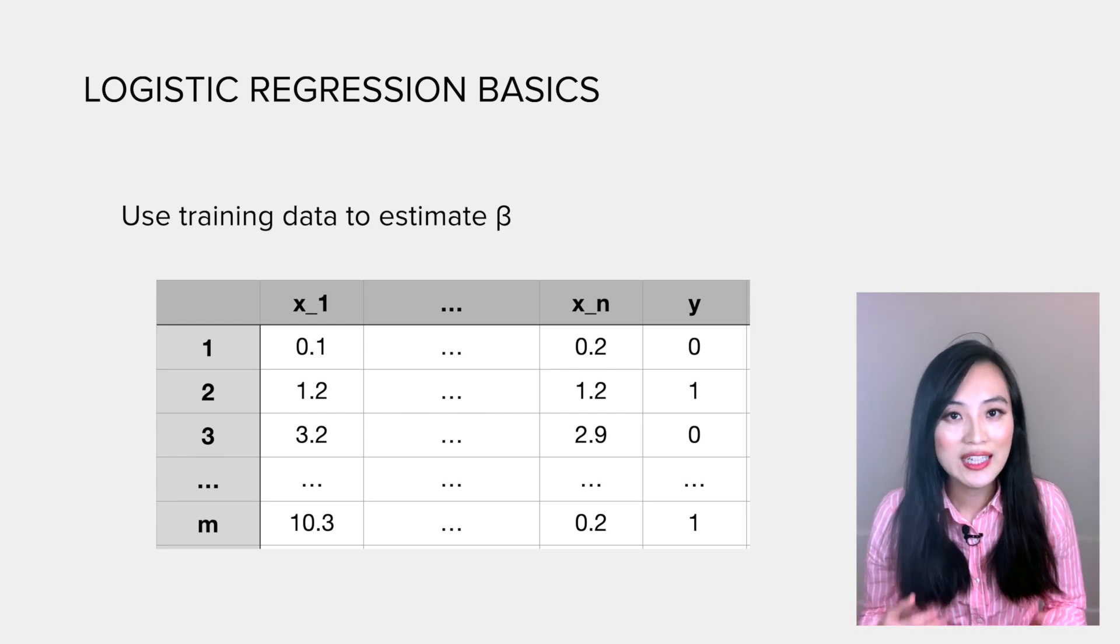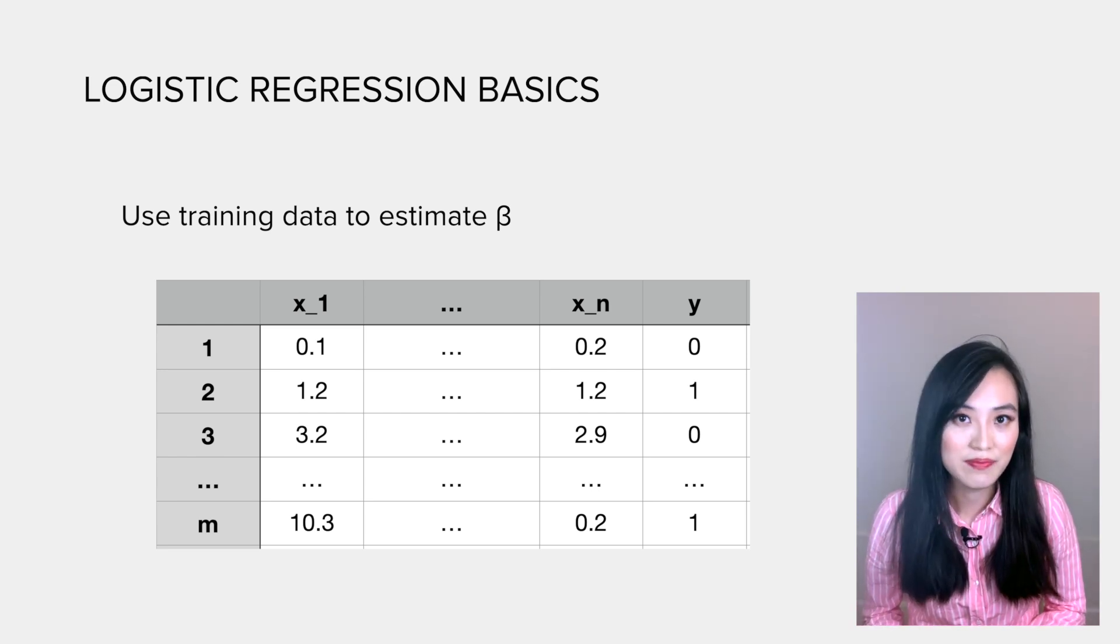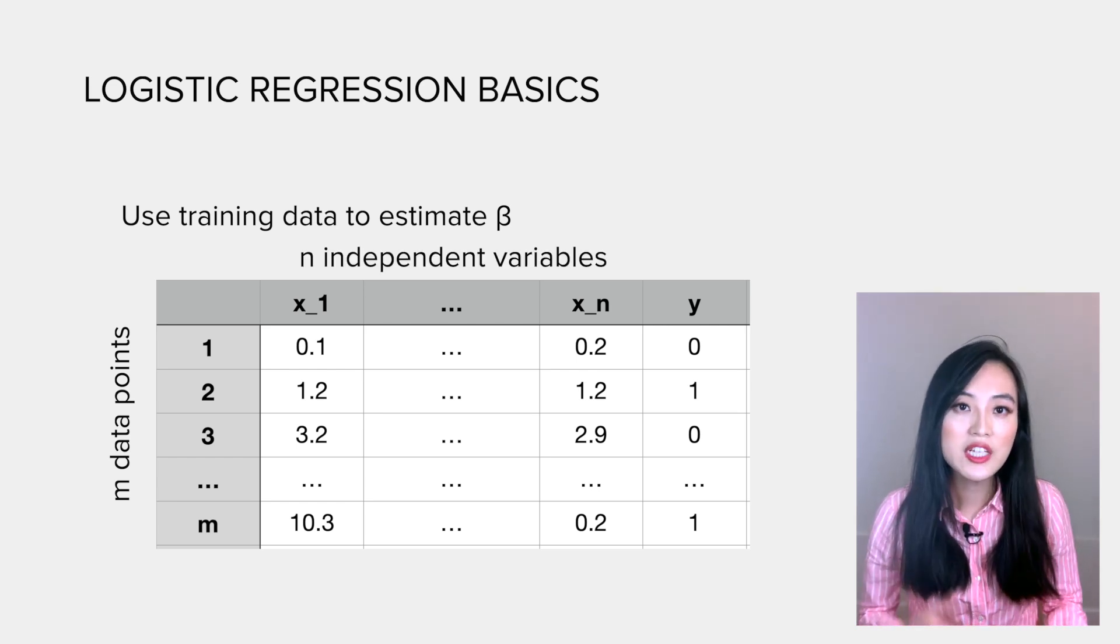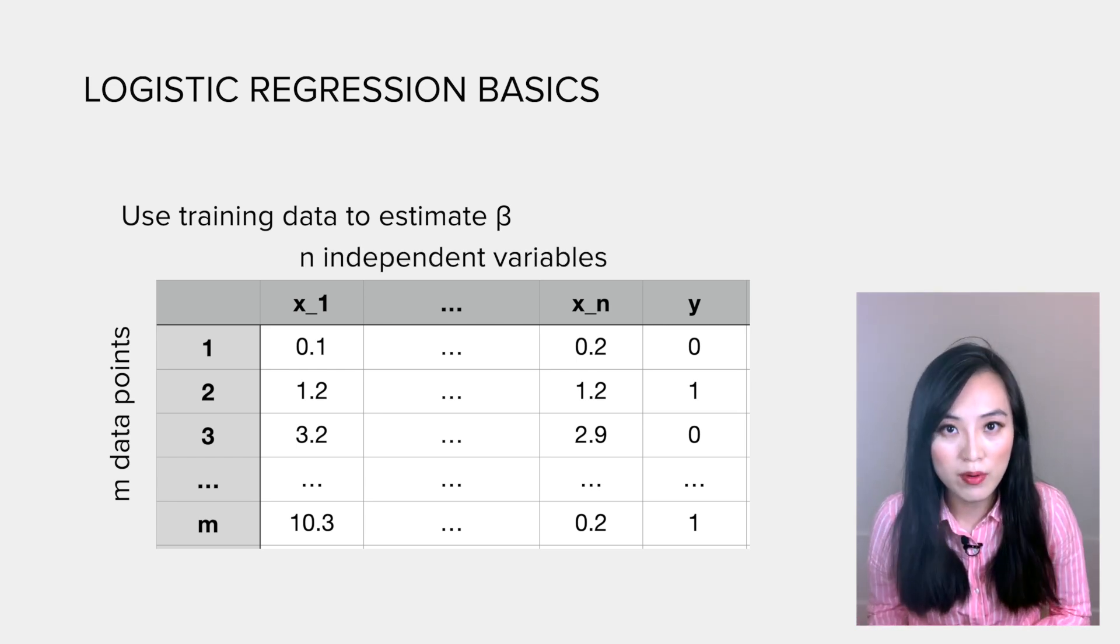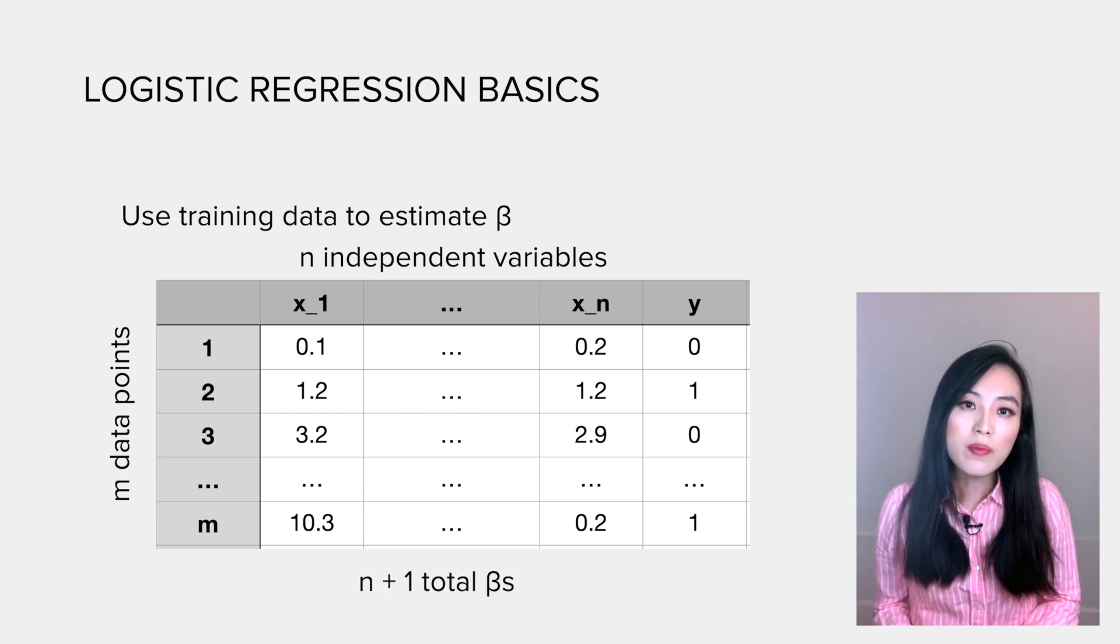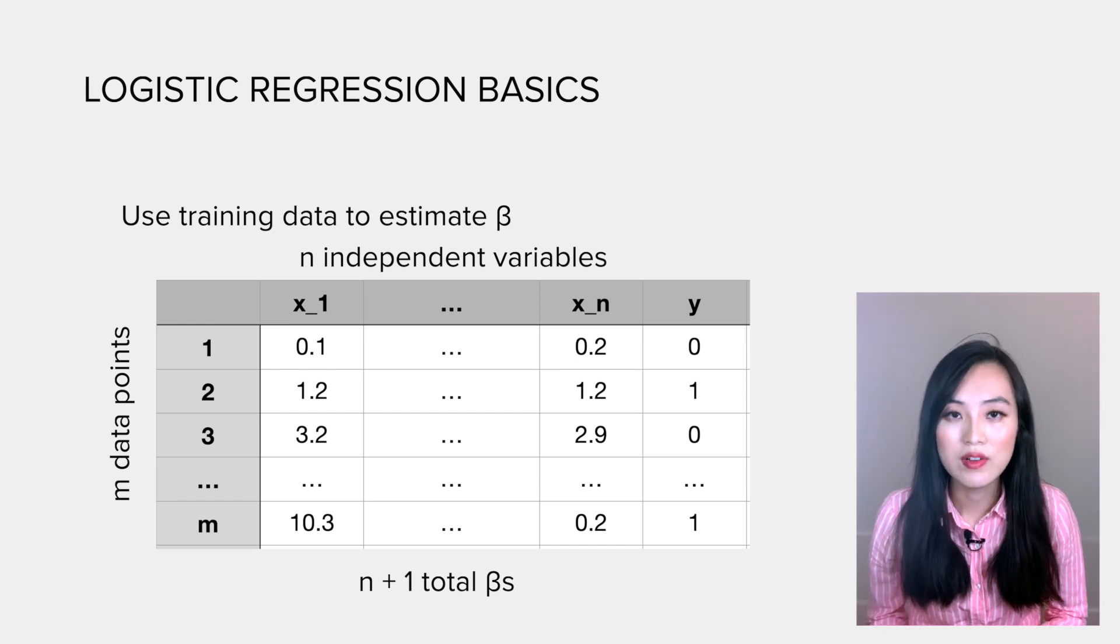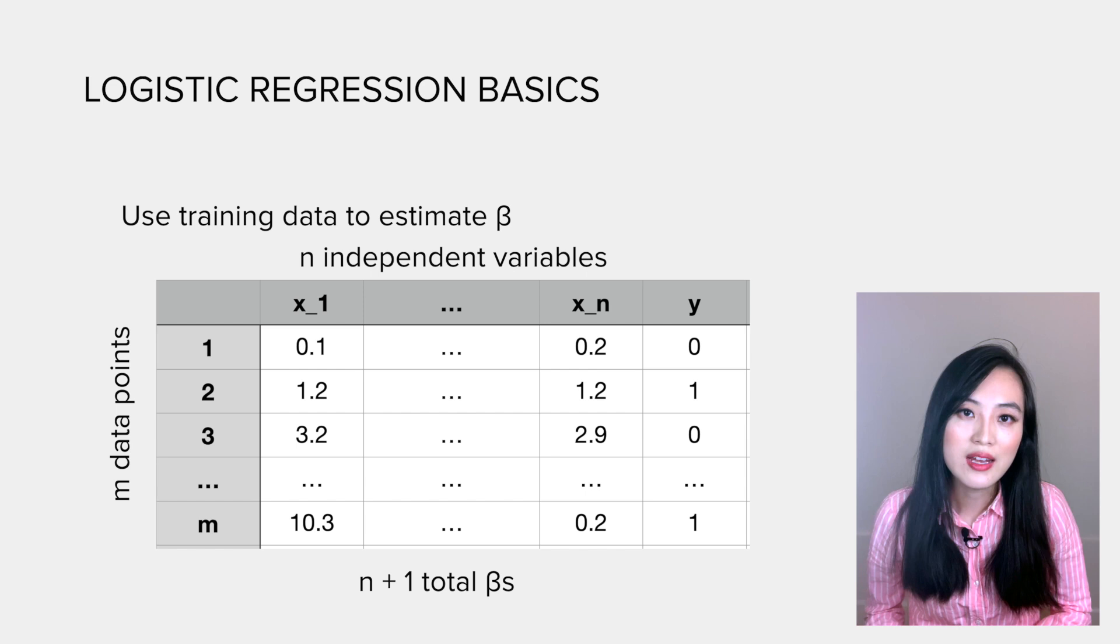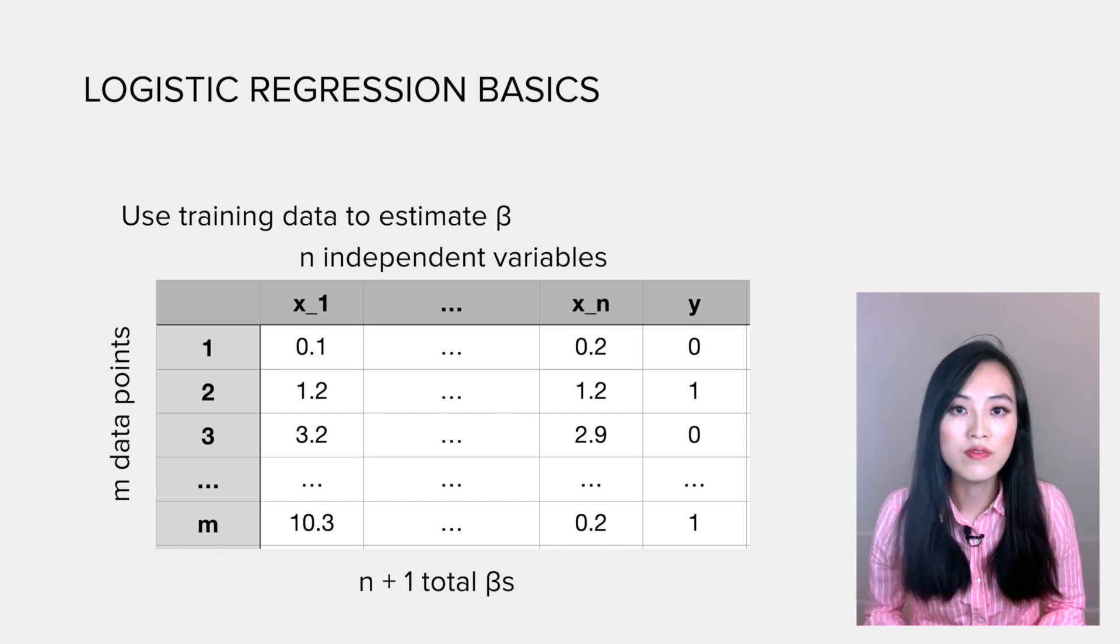Typically, we use a training data set to obtain betas. Say there are a total of m training data points. Each data point has n independent variables from x1 to xn and observed class y. So there will be n plus 1 betas from beta 0 to beta n. We will use this training process to obtain the values of all betas.